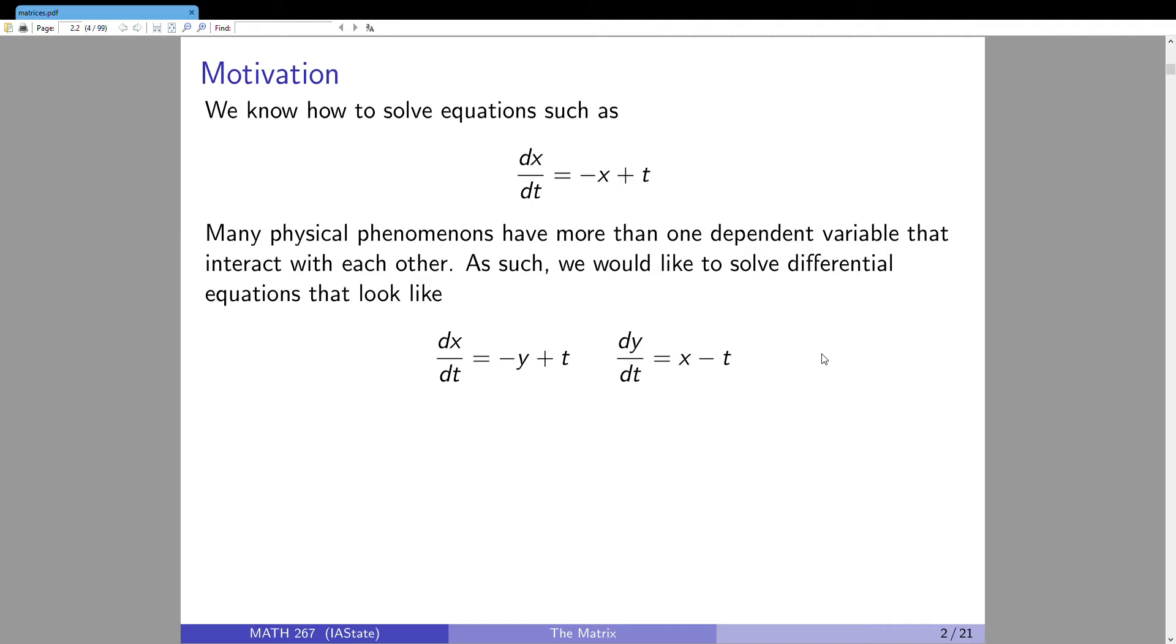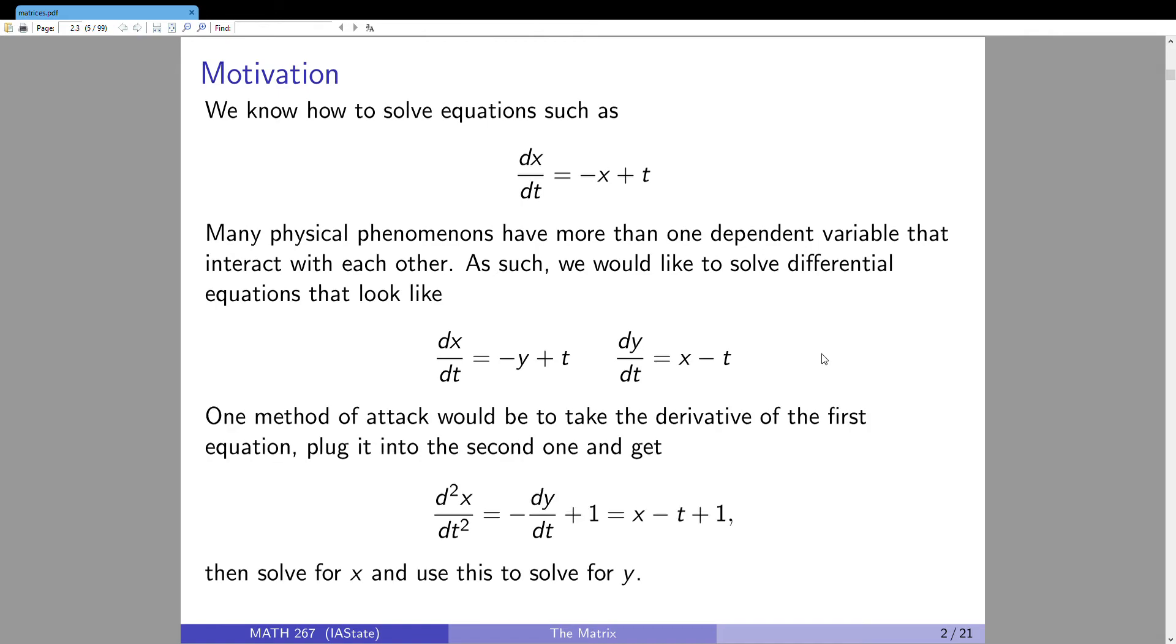So we'll learn how to solve things like this, and now you might immediately notice that something you could do is take the derivative of the first. That'll give you the second derivative of x equals negative dy/dt plus one. And I know what dy/dt is in terms of x, and there we go. So this technique that I just did is sometimes called decoupling. In other words, even though the functions were intermingling with each other, if I played around with it, in fact, they weren't. I was able to decouple them. And then now I've got a second order linear. I know how to solve those. It's a second order, not homogeneous, and then I could solve for x, and since I know x, I can then plug that information over in here and solve for y.